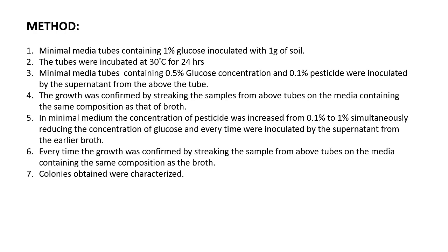For the procedure, you need minimal media. We don't want nutrient-rich media here because we want to isolate or screen for bacteria able to degrade pesticide. Minimal media just supports bacterial growth at the lowest glucose concentration, so bacteria must grow depending on the pesticide. Minimal media tubes containing 1% glucose are inoculated with 1 gram of soil — no pesticide in this first tube, just enriching all soil bacteria.